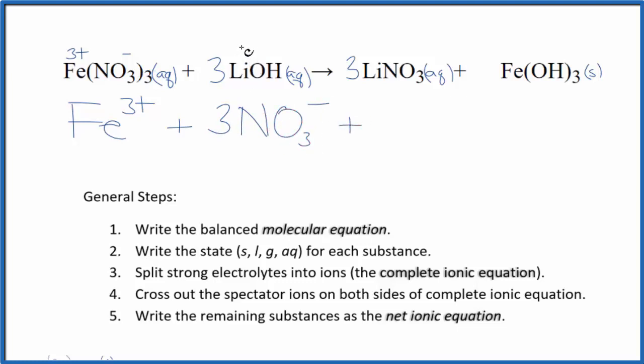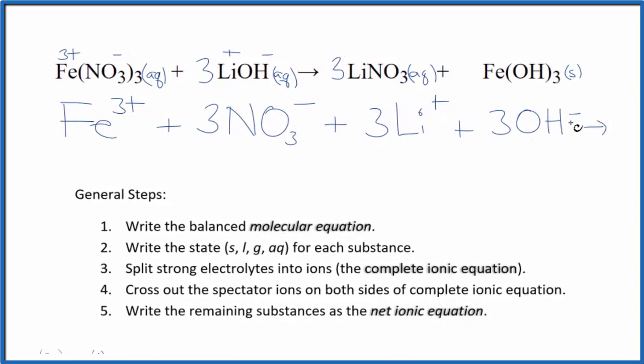Lithium group 1 on the periodic table, 1 plus, the hydroxide ion, always 1 minus. 3 lithium ions, and then 3 of the hydroxide ions. And those are the reactants in our net ionic equation. For the products, we have lithium and the nitrate ions. So 3 lithium ions again, and then 3 nitrate ions.